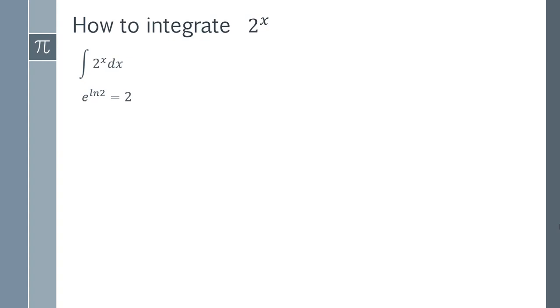So e to the ln 2 is simply 2. When you have e raised to a natural logarithm, you get a cancellation and everything simplifies down. That lets you substitute 2 for this expression here. So I'm just going to do that substitution. Our integration has now become this expression.